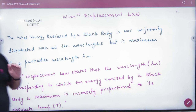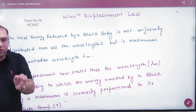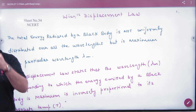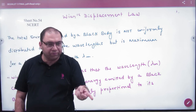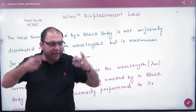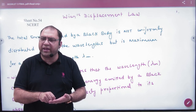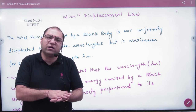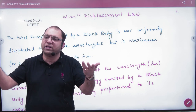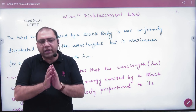A scientist named Wien had a law called Wien's Displacement Law. This law means that if you have any body at any temperature, say 500 Kelvin, 1000 Kelvin, or 2000 Kelvin, then according to Stefan's Law, that body will emit energy per second per unit area. This law was written for a perfectly black body.